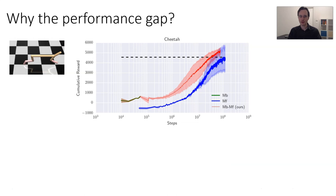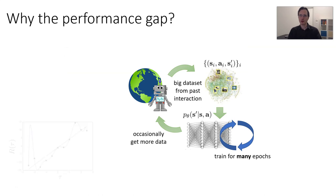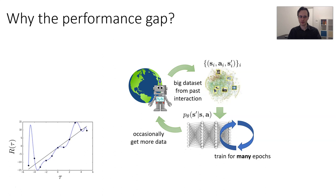So why is there this performance gap? When you're learning from limited data sets, you need a model class that doesn't overfit when it has very limited data, but still has high enough capacity otherwise. If you start with high capacity right away, you'll overfit catastrophically and fail. If you start with low capacity, you'll make progress but then plateau. When you fit a model to limited data, you're going to make mistakes. When you then optimize your reward with respect to your actions, you'll go to exactly those places where the model makes the largest mistake in the positive direction, and this can be catastrophic for the performance of model-based RL methods.